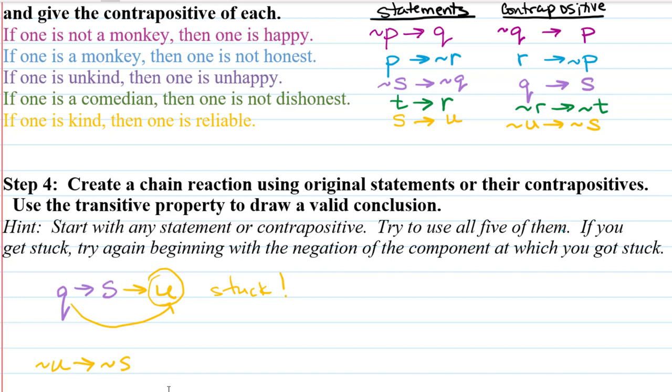Then from not S, we can go to not Q. From not Q, we can go to P. From P, we can go to not R. And not R leads us to not T.